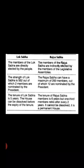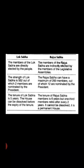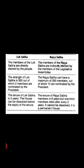Coming to the Rajya Sabha, also known as the upper house of the Parliament — its members are elected by the Legislative Assembly, which is one of the houses of the state government. The Rajya Sabha can have a maximum of 250 members, out of which 12 are nominated by the President and the remaining 238 members are elected by the Legislative Assemblies of the states.